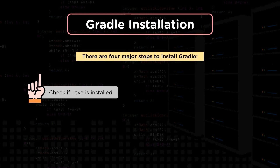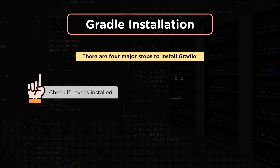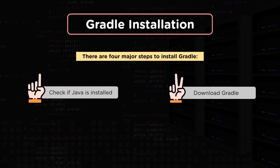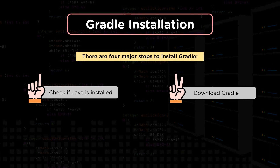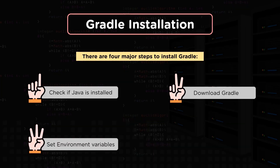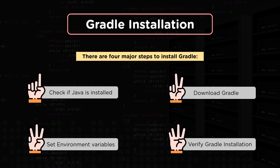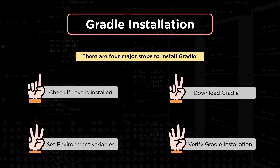The very first step is to check if Java is installed. If Java is not installed, you can go to OpenJDK or Oracle Java to do the installation of the JDK on your system. JDK 8 is the most commonly used version. Once Java is downloaded and installed, you then do the Gradle download. Once the Gradle binaries or zip file is downloaded, you add the environment variables and then validate if the Gradle installation is working as expected.